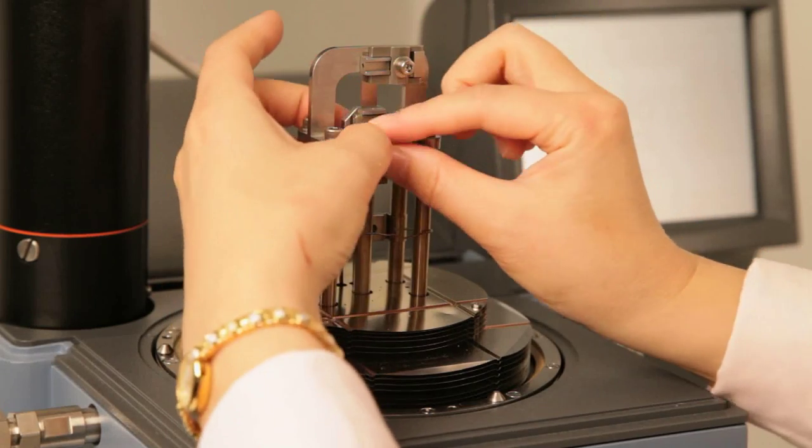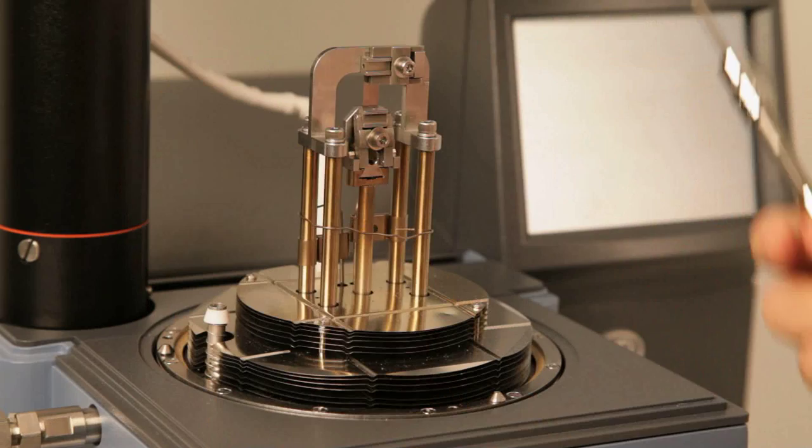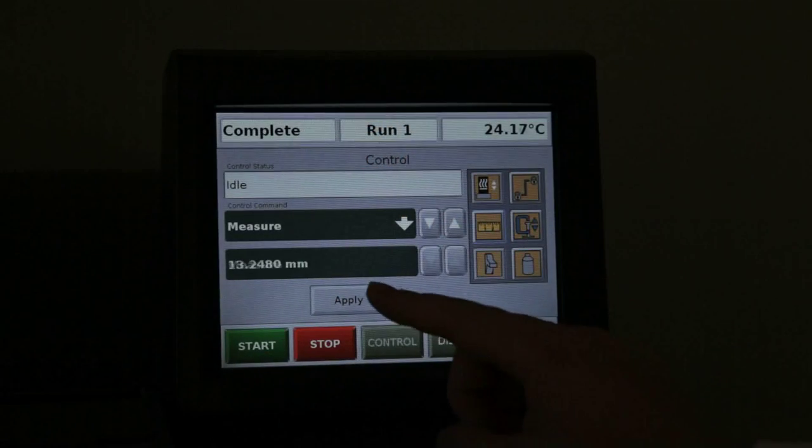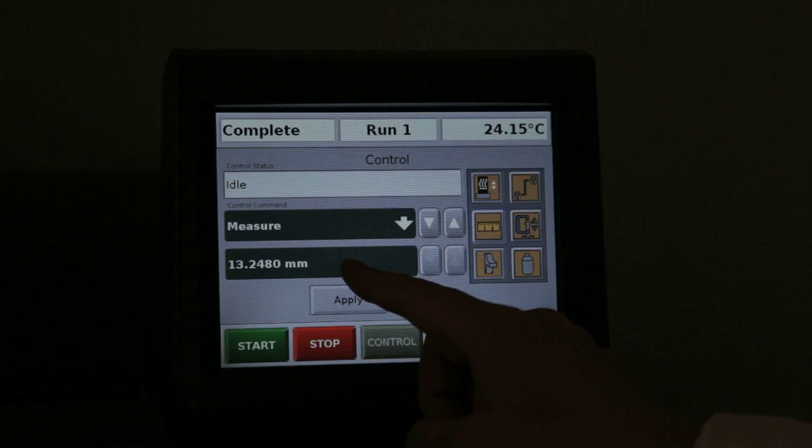Use the torque wrench with the range of 2 to 4 inch pound to tighten the screws. Click on Measure from the instrument touch screen. Record the length of the steel shim.